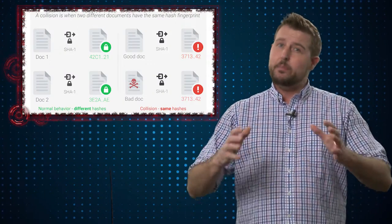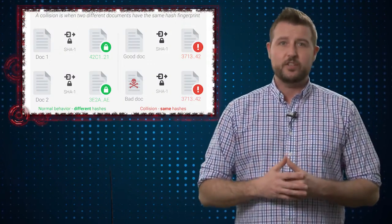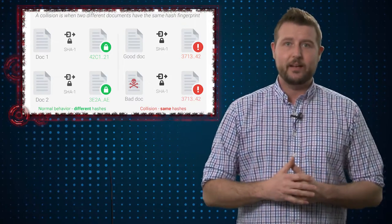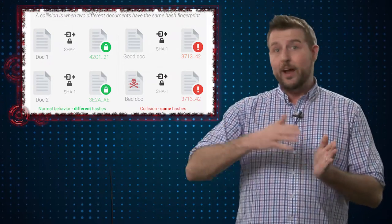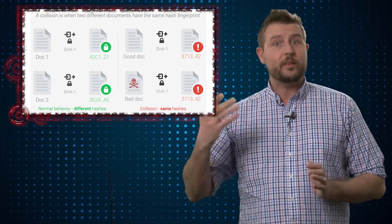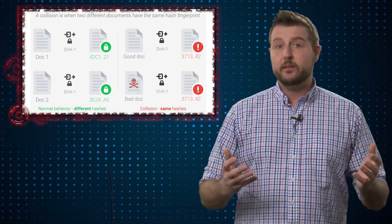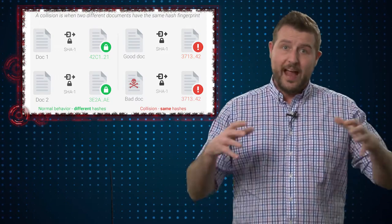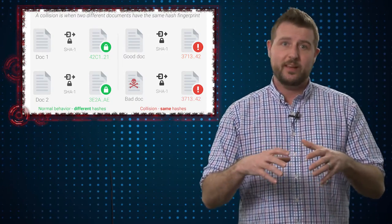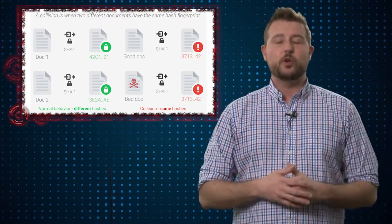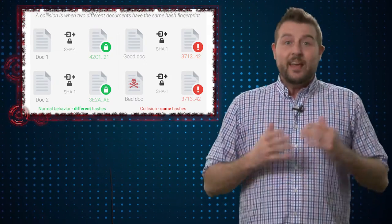Just like normal human fingerprints, if you and I's fingerprints were the same, they would be worthless for us to identify each other uniquely. That's why the best hashing functions are ones that can uniquely identify a set of data without colliding with another set of data. And what that means is if two different data sets actually generate the same hash, that is bad because it no longer becomes a unique fingerprint.